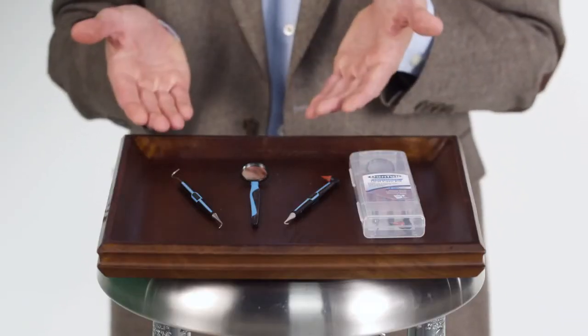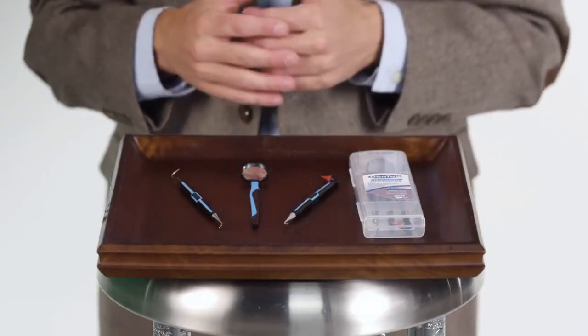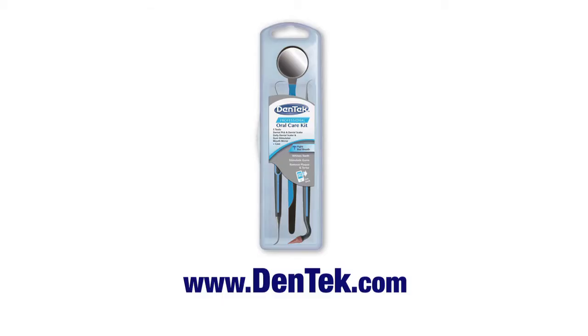So to review, two scalers, a gum stimulator, a pick, and a mirror, all in a handy storage case. Go pro with Dentec. Go beyond brushing.